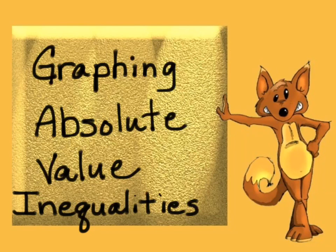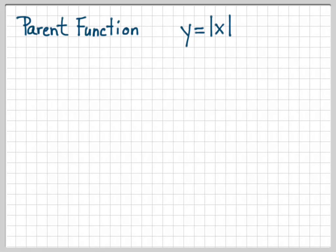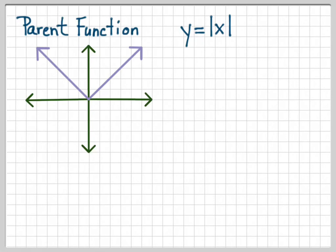Here we go with graphing absolute value inequalities. We're talking about a parent function that is y equals the absolute value of x. That is the most vanilla — it's centered at 0,0 with nothing special about it. The vertex is at 0,0. The slope of the right arm is 1 and the slope of the left arm is negative 1.